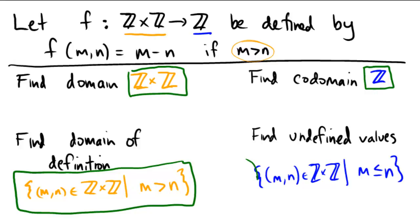So the places where the function is undefined would be the rest of the values. Would be the places where we don't satisfy m being bigger than n, and rather where m is less than or equal to n.